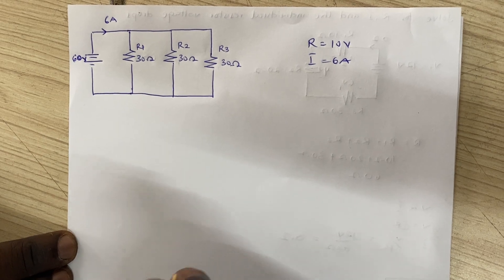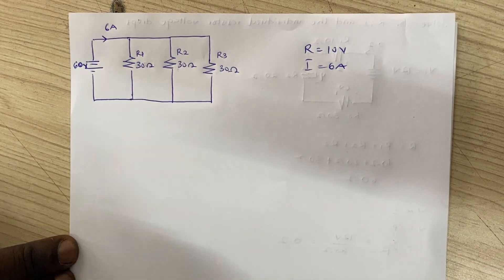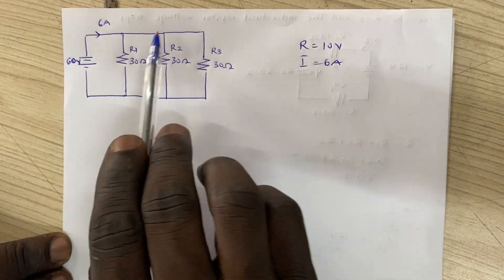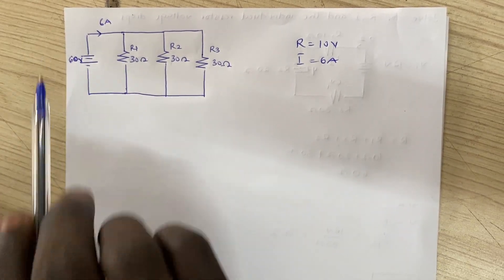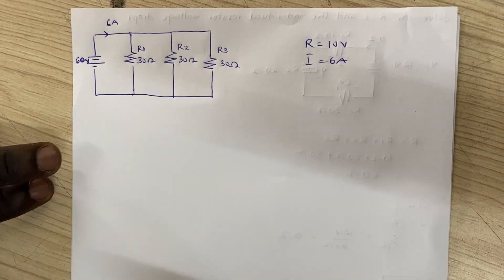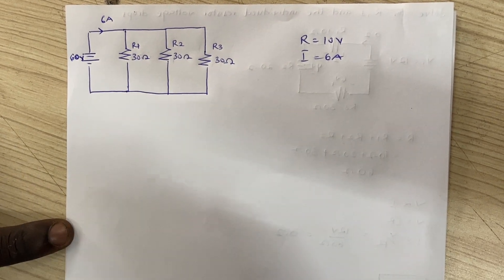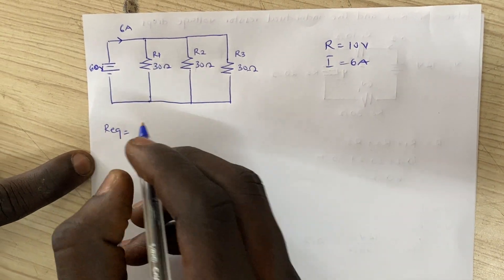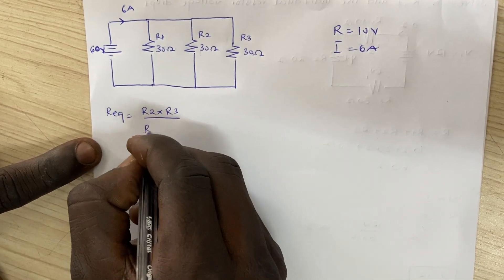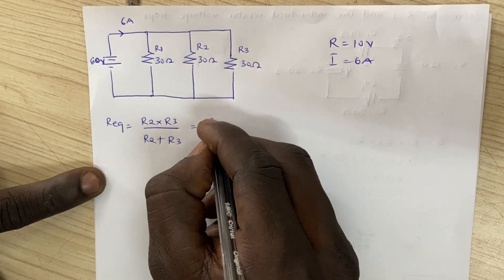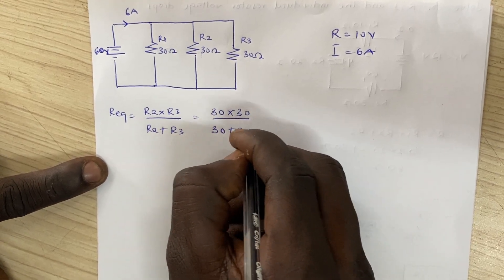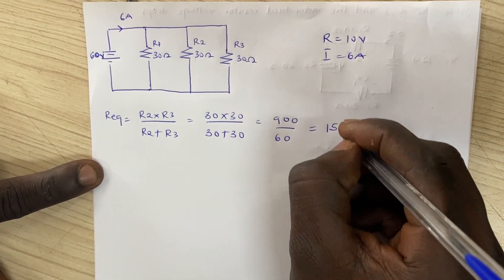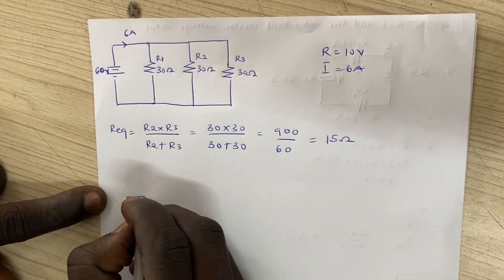The current divider rule can only be used for two resistors that are in parallel. In this case we have three resistors in parallel, so we need to find the equivalent of two of them first. For two resistors in parallel, we multiply them for the numerator and add them for the denominator. So R2 parallel R3 equals R2 times R3 divided by R2 plus R3, which gives us 30 times 30 over 30 plus 30, that's 900 over 60, giving us 15 ohms.